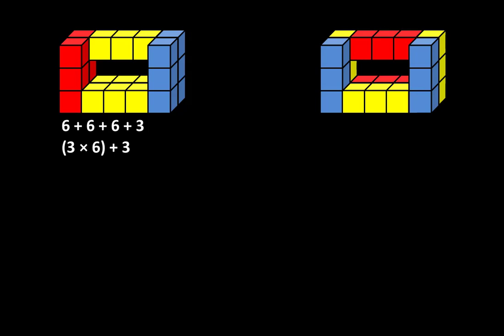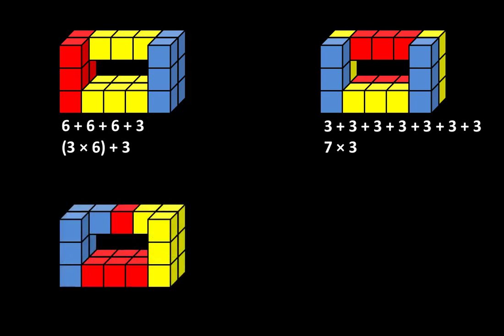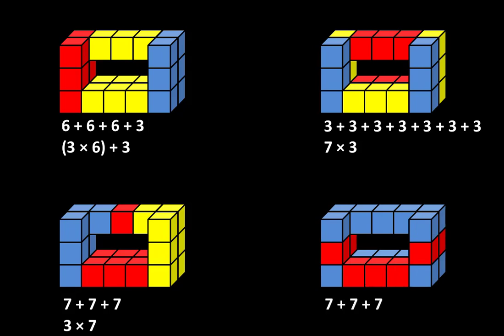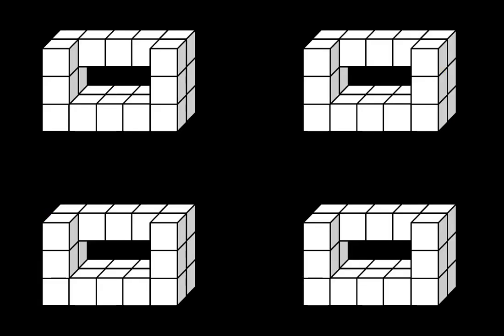Let's take a second look at how the structures were broken apart. Almost every time we find more than one way to describe what we see. The first structure can be described as six plus six plus six plus six plus three, or as three groups of six plus three. The second as three plus three plus three plus three plus three plus three plus three, or seven groups of three. The third and fourth structures can each be described as seven plus seven plus seven, or three groups of seven. Can you see it several different ways? You can pause the video to find even more ways to break this shape apart.